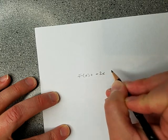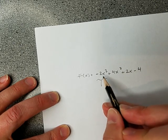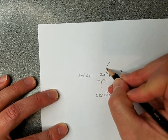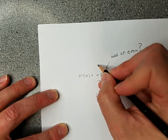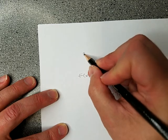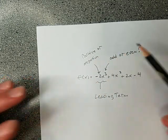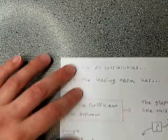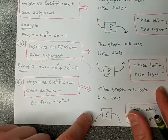So with all four possibilities in mind, when you have a polynomial, look at the leading term and decide: is the leading coefficient positive or negative, and is the exponent even or odd? For example, f of x equals negative 2x to the third power plus 4x squared plus 2x minus 4. The term with the highest power is the leading term. The exponent is odd or even, and the leading coefficient is positive or negative — that's all you need to determine which of the four cases applies.